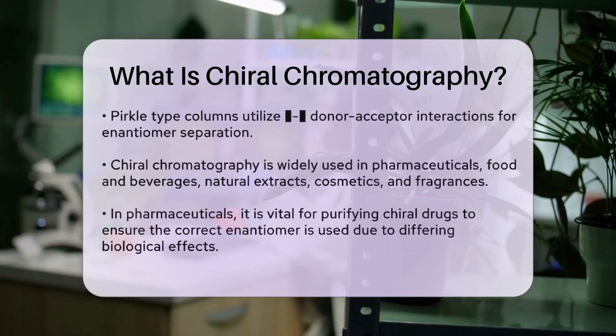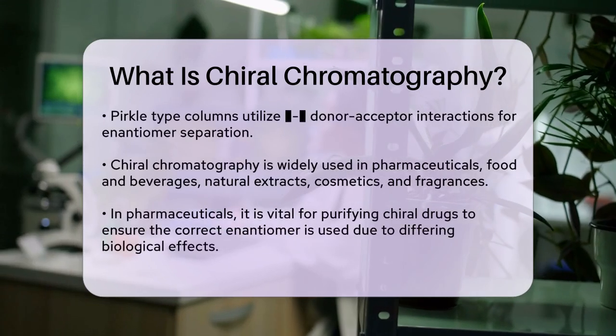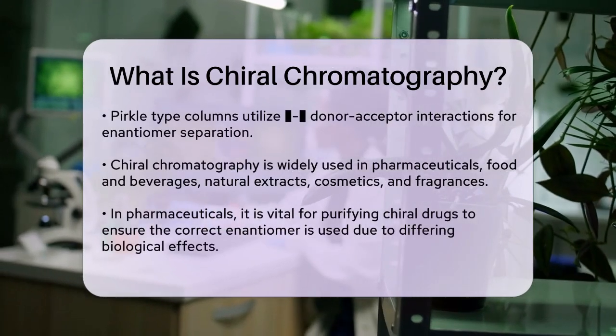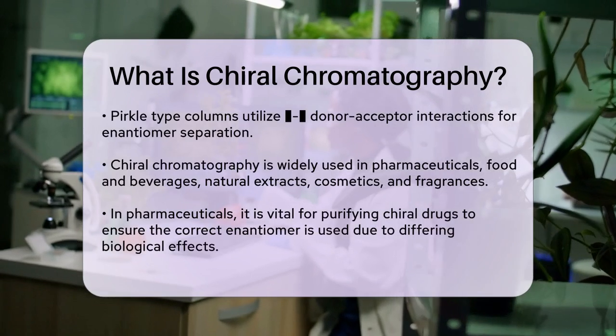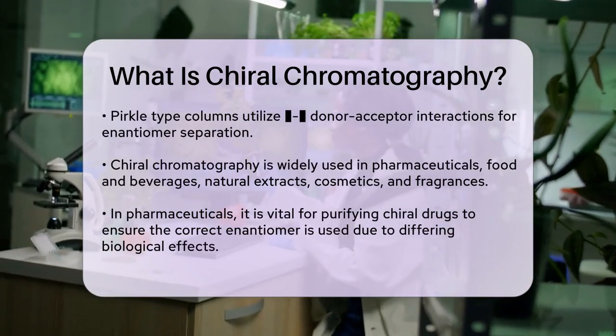Each of these types has its own way of interacting with the enantiomers. For instance, percal-type columns use pi-pi donor-acceptor interactions to separate enantiomers.